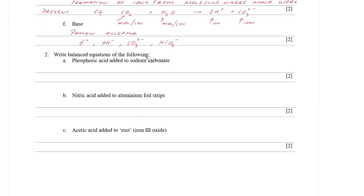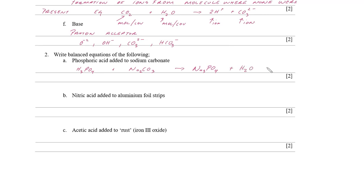Now for balanced equations. Phosphoric acid — H₃PO₄ — plus sodium carbonate. Carbonate is double negative, sodium is single positive, so make sure you have the formulas right. An acid plus a base gives a salt — sodium phosphate. Phosphate is triple negative, sodium is single positive, so you need three sodiums, and because it's a carbonate you'll also get CO₂ bubbles and water. Now we need to balance this.